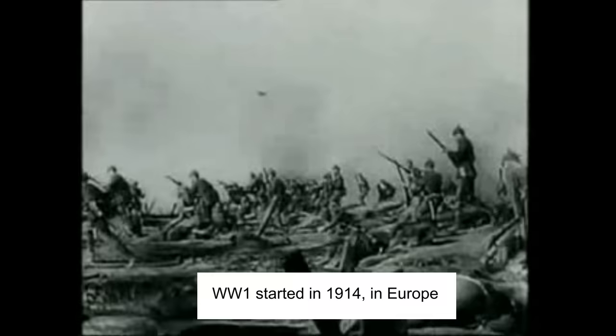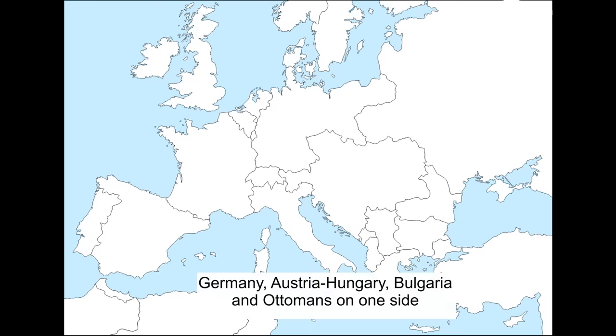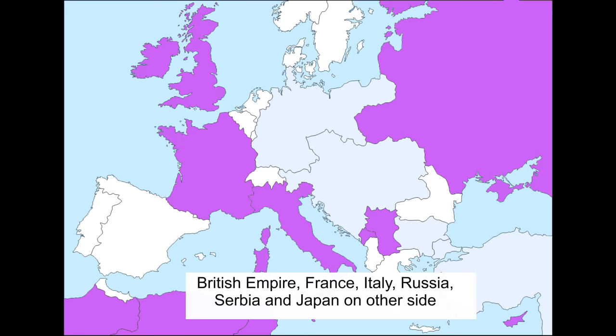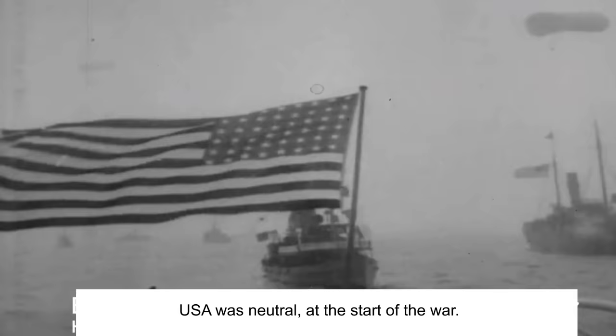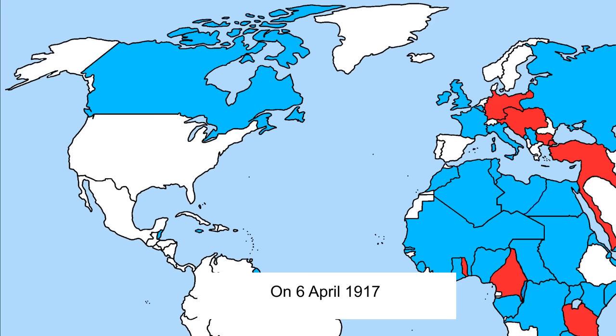The First World War started in 1914 in Europe. Germany, Austria, Hungary, Bulgaria and Ottomans on one side. The British Empire, France, Italy, Russia, Serbia and Japan on the other side. USA was neutral at the start of the war. On April 6, 1917, USA decided to enter the war on the Entente side.